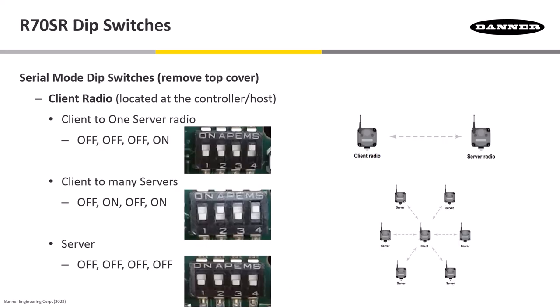In serial mode, looking at the DIP switch setup for the client radio, which is the one that would be located at the host or the controller, the only one that we're going to be turning on is the fourth DIP switch when we're talking from one client to one server. If we're talking to many servers or repeaters, we are going to turn on that second DIP switch there. So we'll be in an off-on, off-on setup for the client. And for the servers, we're going to have all four DIP switches off.